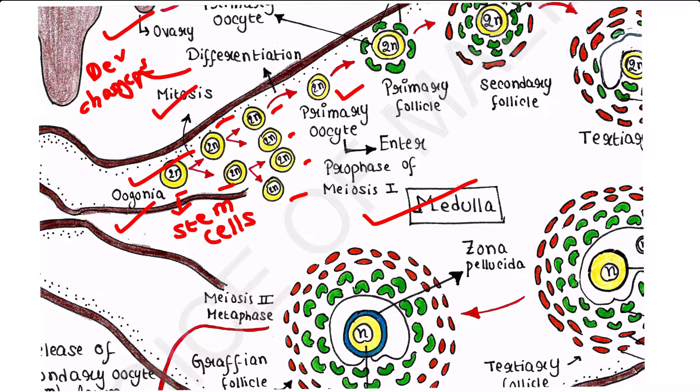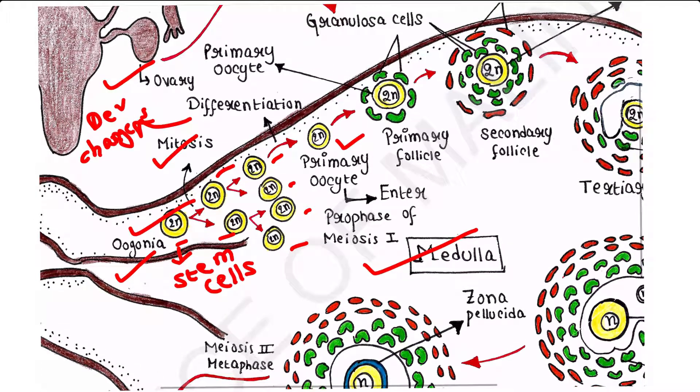Primary oocytes then enter prophase of meiosis 1. They enter prophase of meiosis 1 during fetal development, but they do not complete the phase, the meiosis 1 phase, until after puberty.